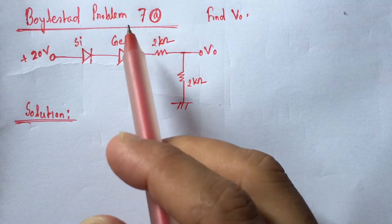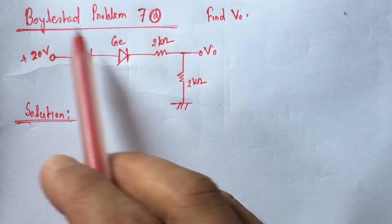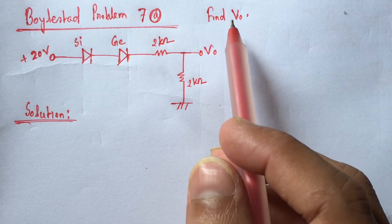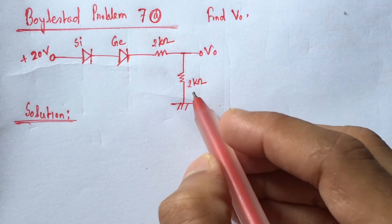Hi viewers, today we will solve problem 7A from Boylestad. Here we have to find out the voltage V0 across this 2 kilo ohm resistance.